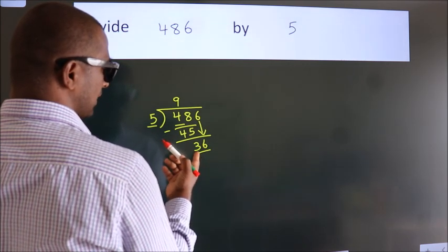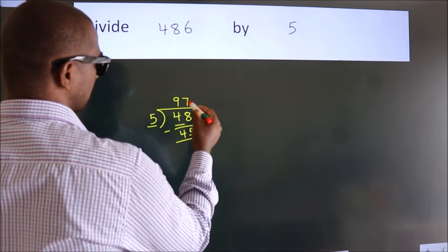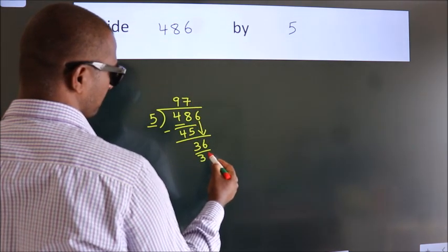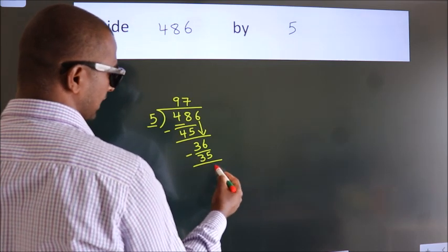A number close to 36 in 5 table is 5 7s 35. Now, we subtract. We get 1.